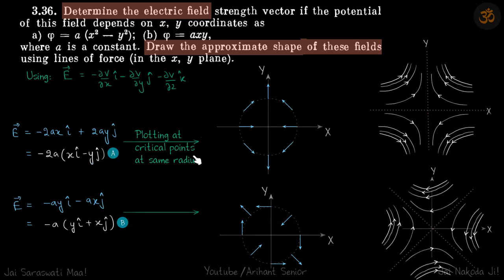So on the circle, we plot the critical points. For example, here. So here y is 0 and x is positive. When y is 0 and x is positive, field is in negative x direction. So we plot it like this.